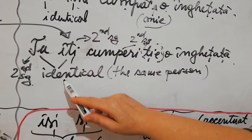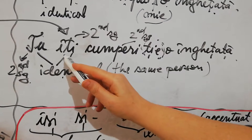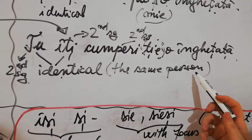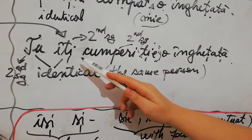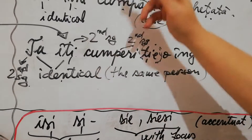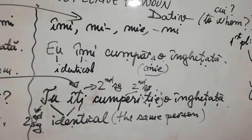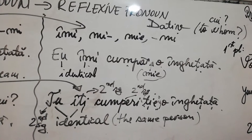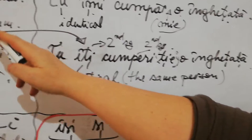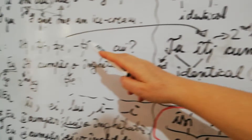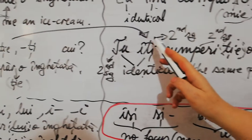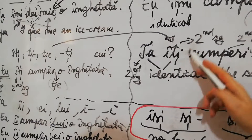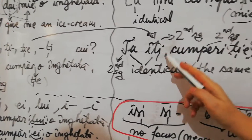Now what if you buy yourself an ice cream? 'Tu îți cumperi ție o înghețată.' This time we have identical persons - second person singular and second person singular. So the pronoun becomes reflexive. But the reflexive pronoun has no form of its own, so it goes to its brother the personal pronoun and borrows a form. The personal pronoun says: 'Now I give you the form.'